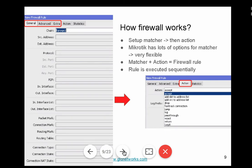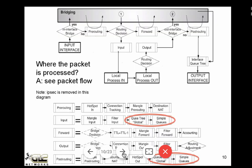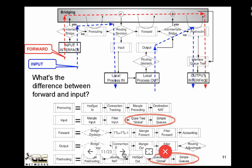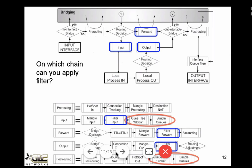The raw table is very useful for mitigating DDoS attacks, so we really encourage people to use the raw table. Now, we've already talked about packet processing and the difference between forward and input.